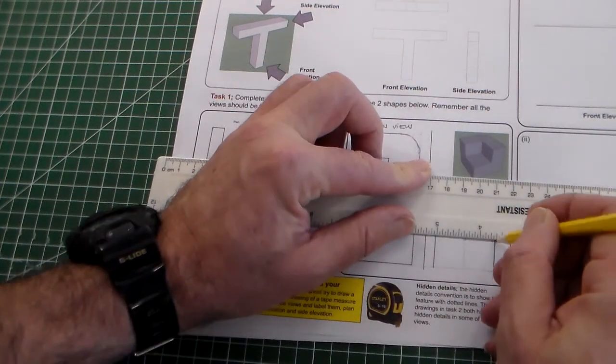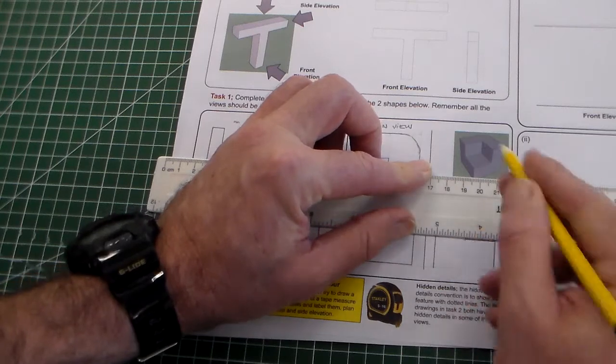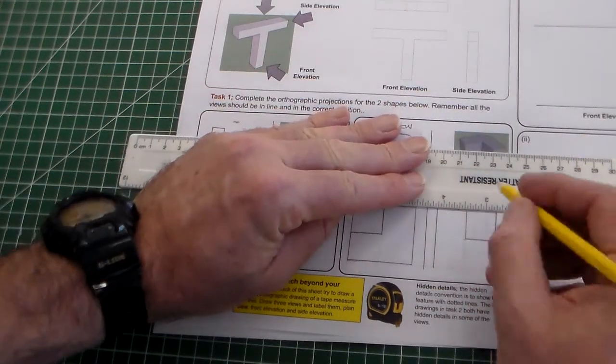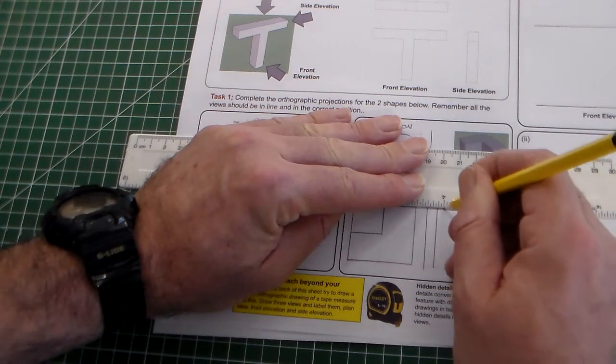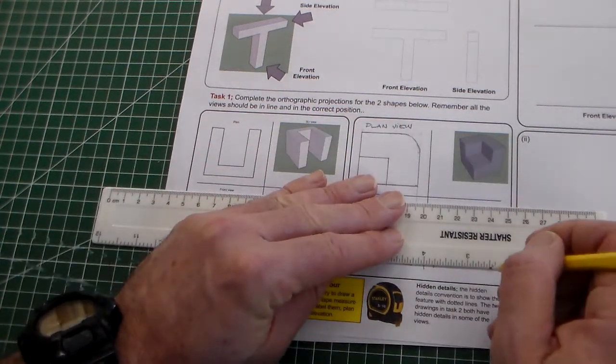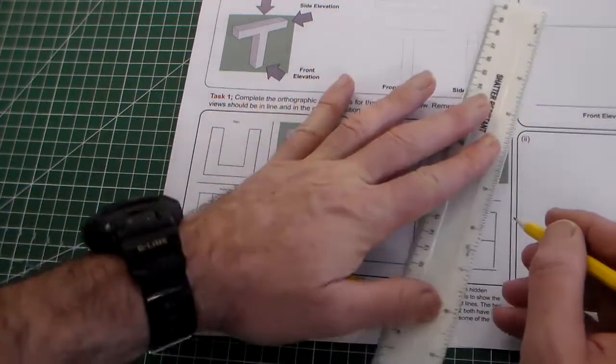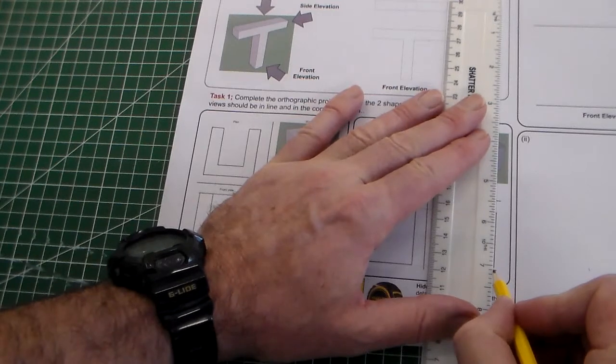And although that curve is shown in the top in the plan view, this curved edge here, it's not seen in any of these views.